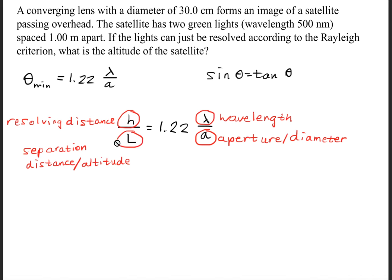The variable L stands for the separation distance, or sometimes we call it the altitude in certain questions. What this is referring to is how far away must I be so that I can distinguish two points from one another.